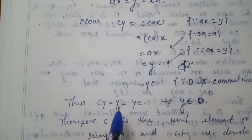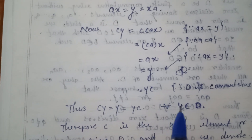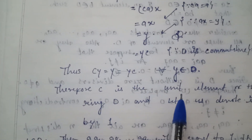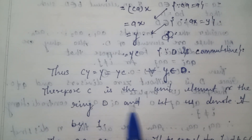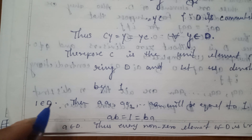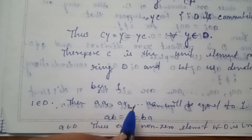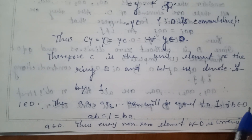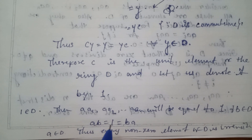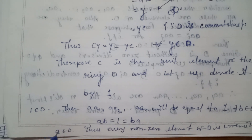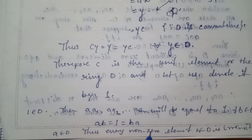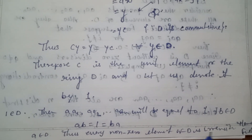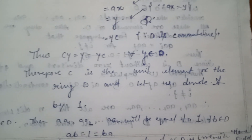Thus C·Y = Y = Y·C for all Y in D. Therefore C is the unit element of the ring D; denote it by 1. Since 1 belongs to D and A·A1, ..., A·AN covers all elements, there exists B in D such that A·B = 1 = B·A. Thus every non-zero element of D is invertible, hence D is a field.